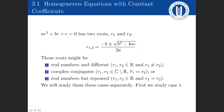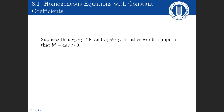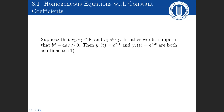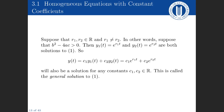Case one: suppose the two roots are real and different, i.e., b squared minus 4ac is strictly greater than zero. Then we know two solutions: e to the r1 t and e to the r2 t. Both are solutions to the differential equation, and therefore every linear combination of them is also a solution. In fact, c1 e to the r1 t plus c2 e to the r2 t is the general solution.